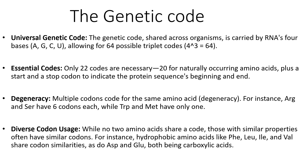Only 22 of these codes are necessary: 20 are for naturally occurring amino acids such as leucine, proline, and methionine, plus a start and a stop codon, which indicate the beginning and end of the protein sequence. A start codon indicates where translation is initiated and a stop codon indicates where it ends. There's also degeneracy — multiple codons can code for the same amino acid. For instance, arginine and serine have six codons each, while tryptophan and methionine only have one.